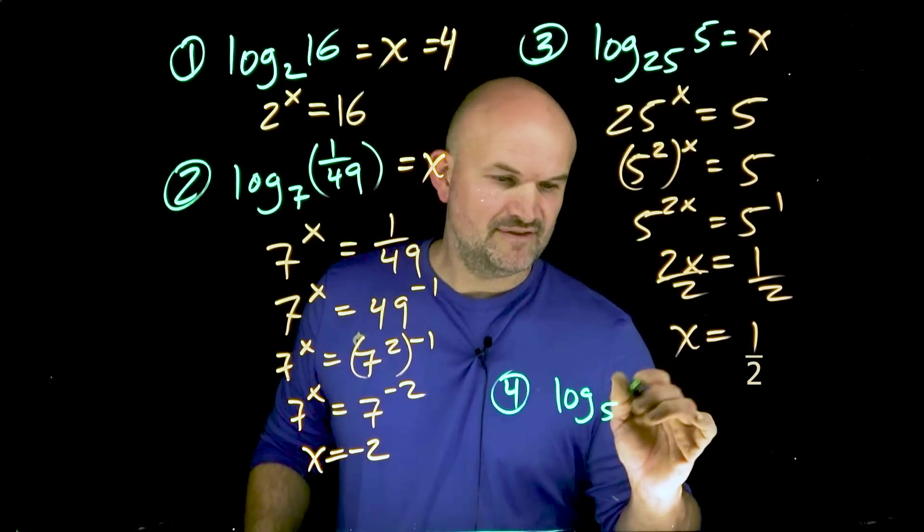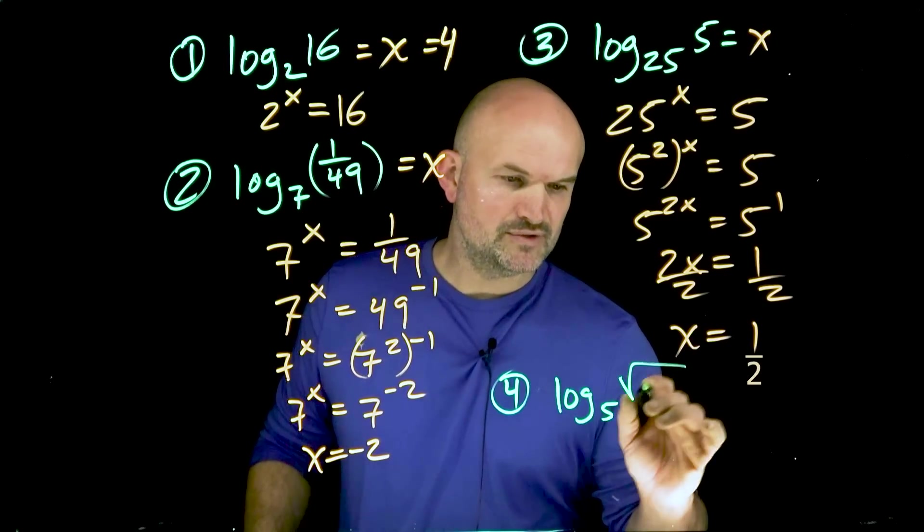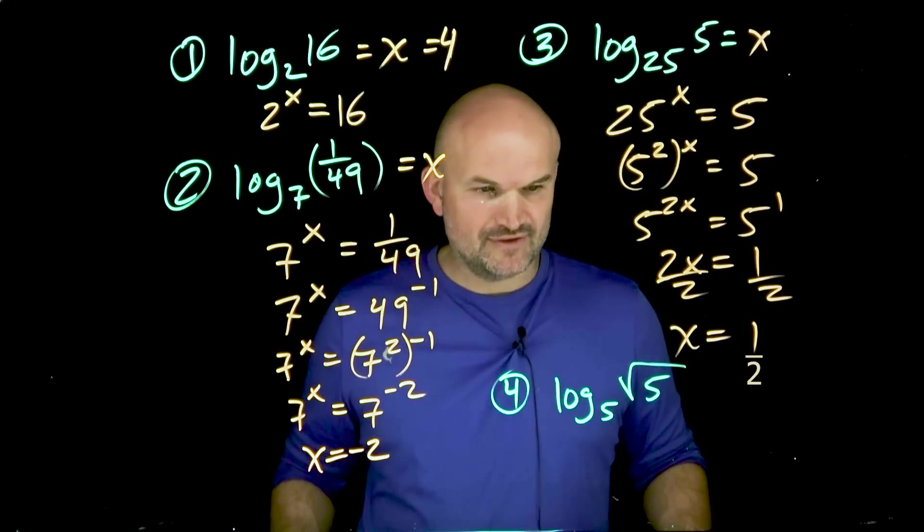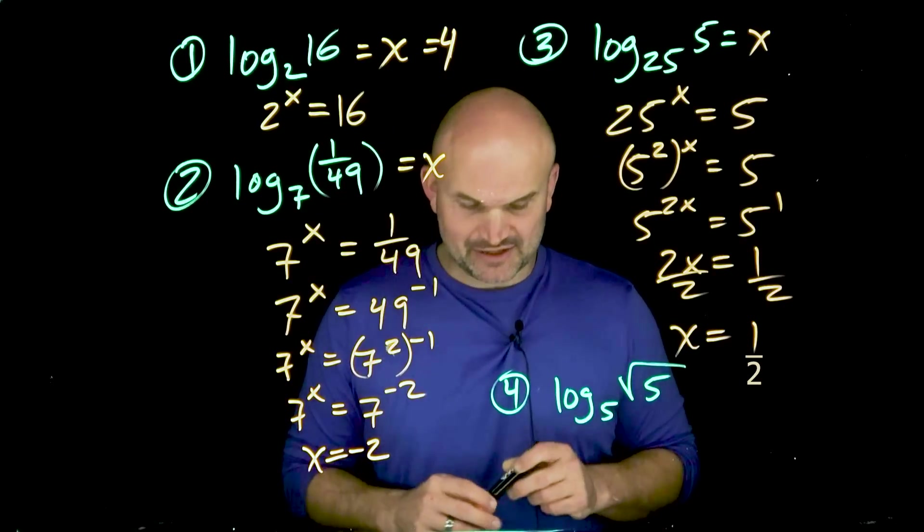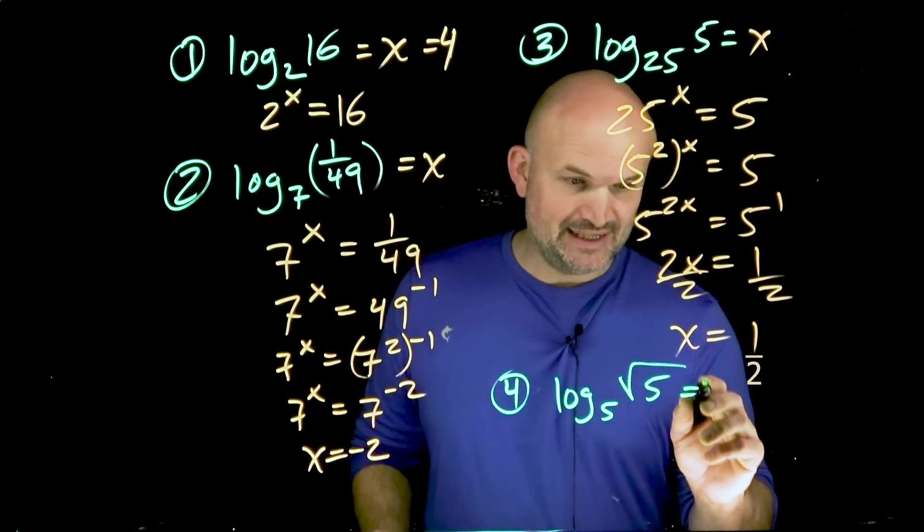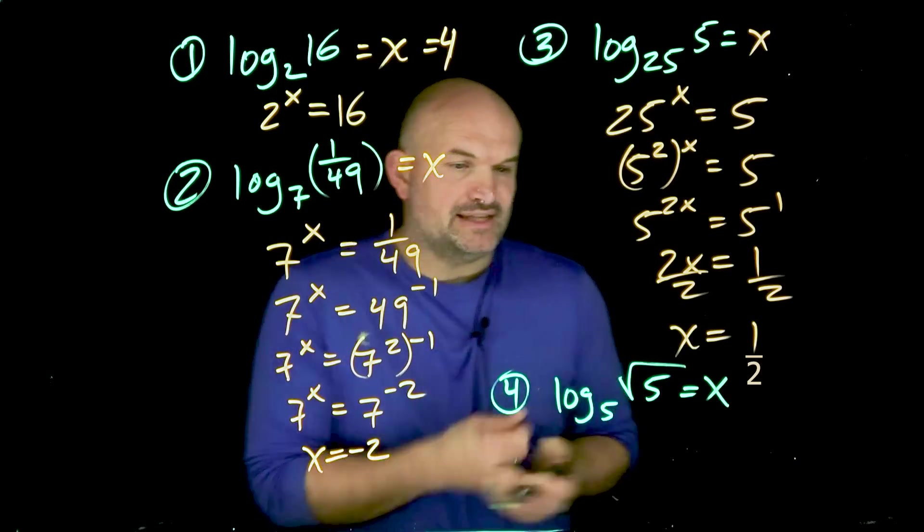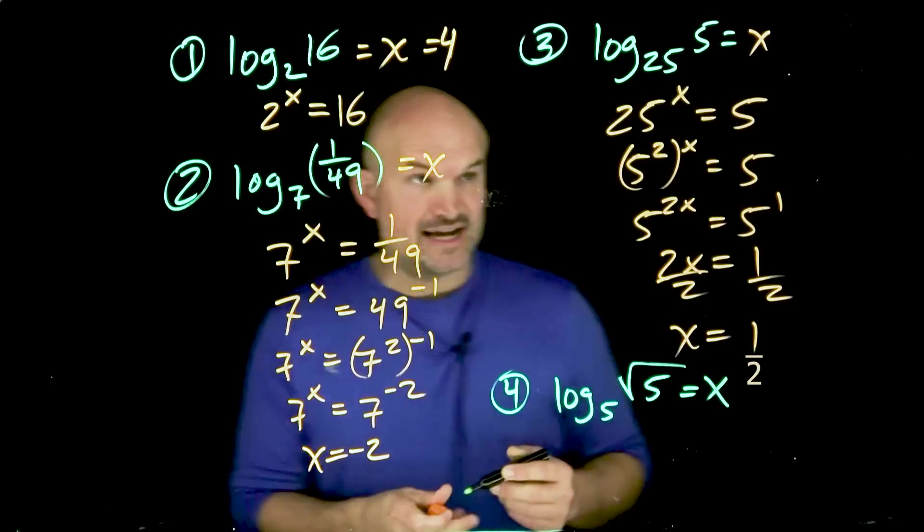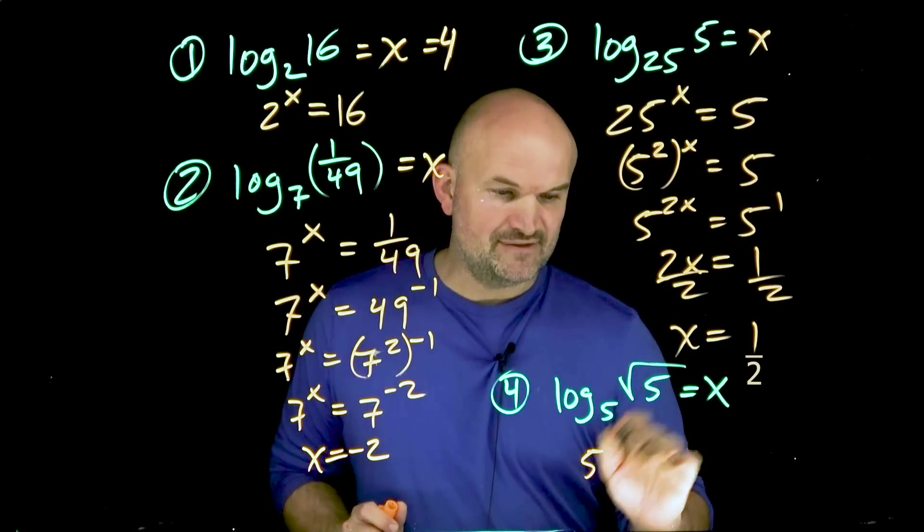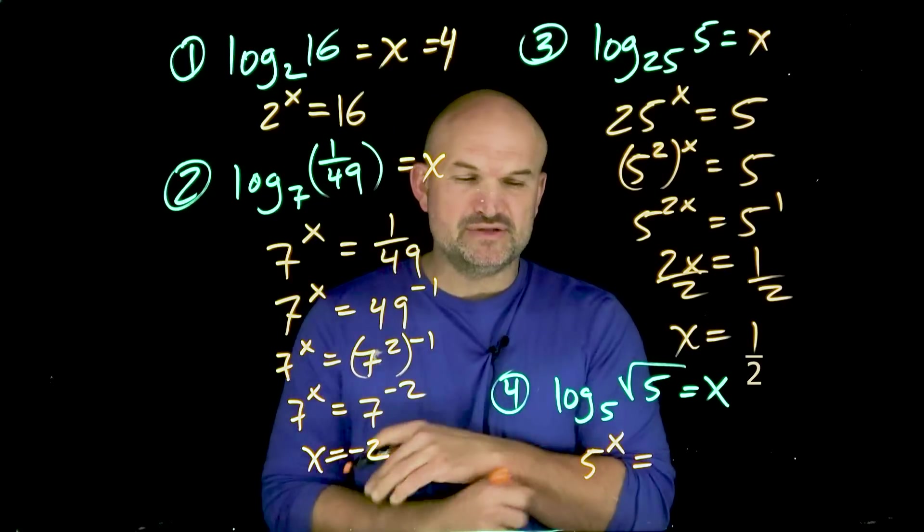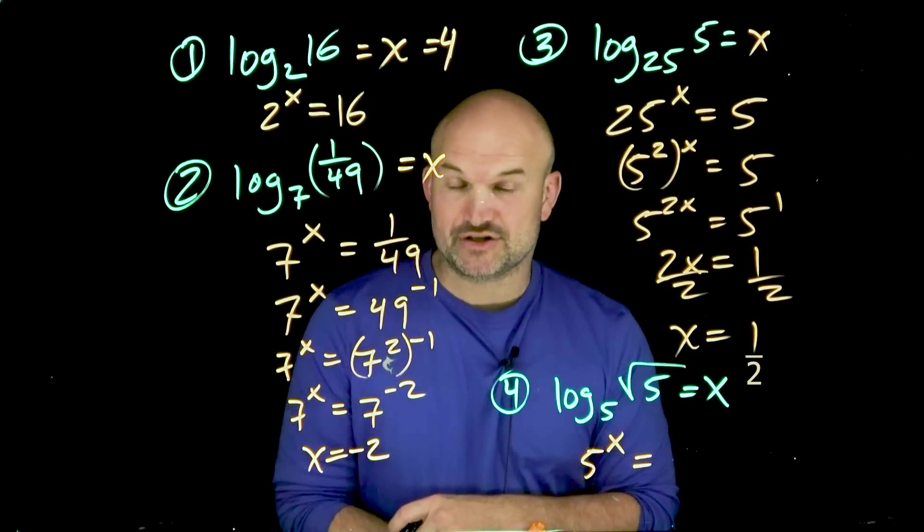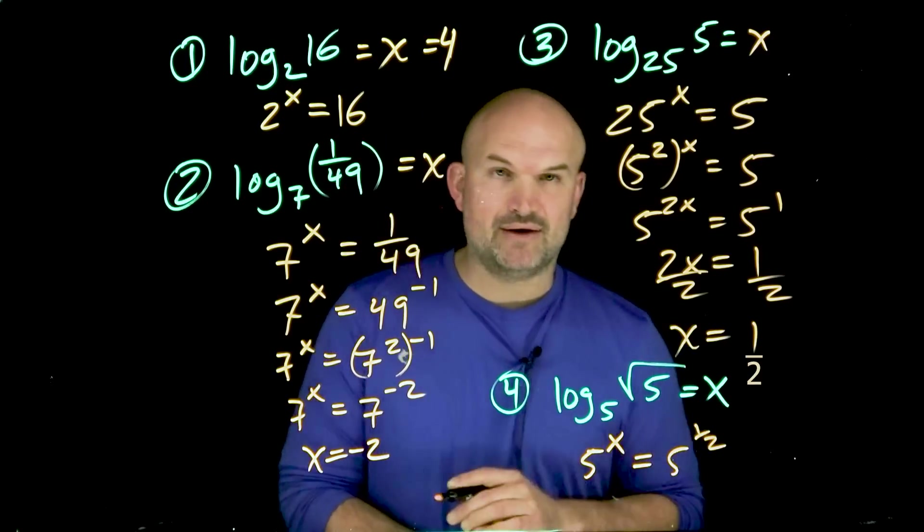So log base 5 of square root of 5. What do we do when we have a radical? I think it's really important to recognize if we're going to say this is equal to x. What we can do is rewrite this in our exponential form so we can see what this would be. I could rewrite this as 5 raised to the x power equals, now rather than using the square root of 5, I'm going to rewrite that as a rational power, which would be 5 raised to the 1/2 power.